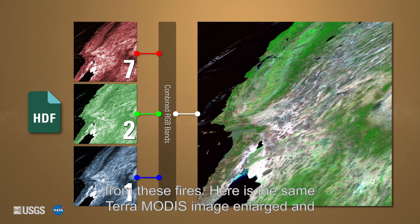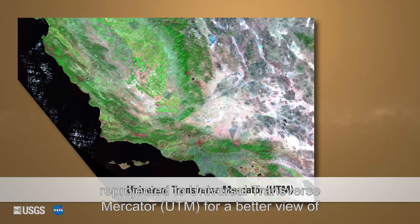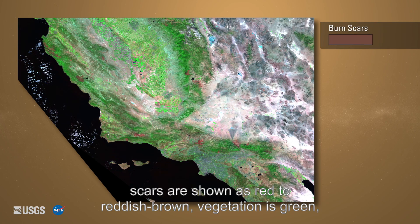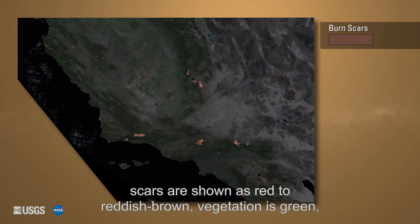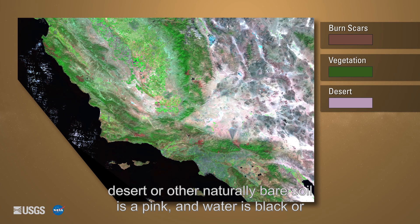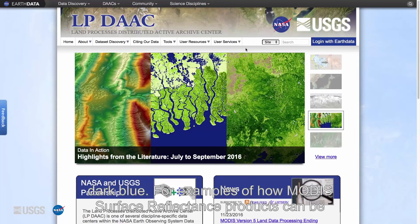Here's the same Terra MODIS image enlarged and re-projected to Universal Transverse Mercator UTM for a better view of the burn scars in California. In the 7-2-1 band combination, burn scars are shown as red to reddish brown, vegetation is green, deserts or other naturally bare soil is pink, and water is black or dark blue.